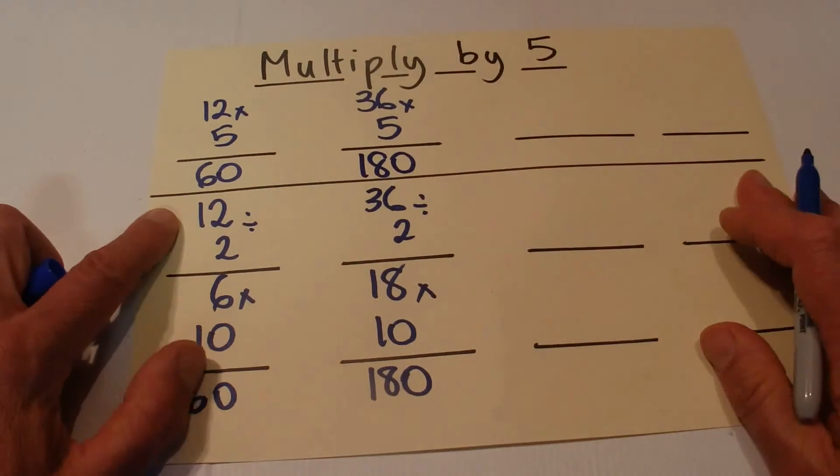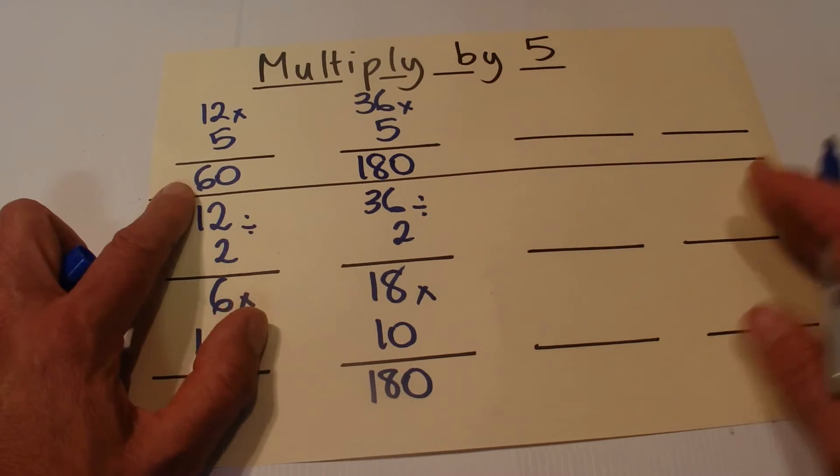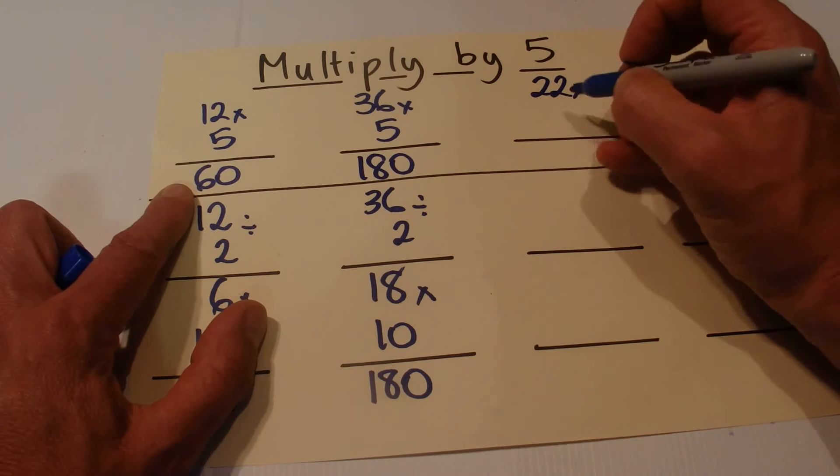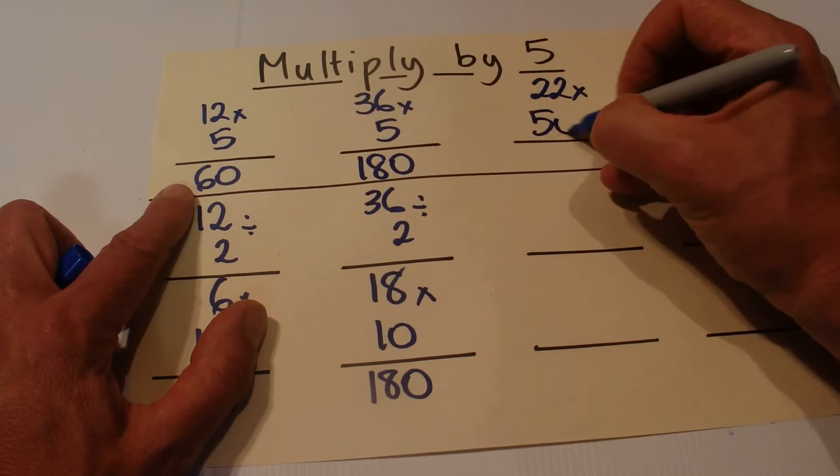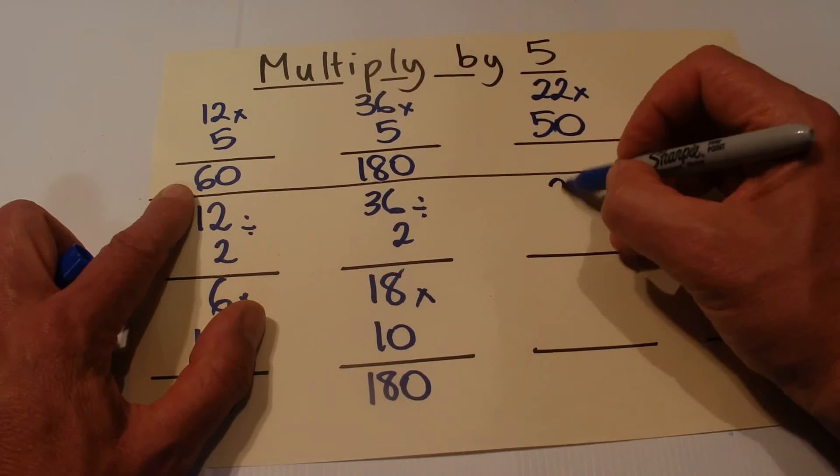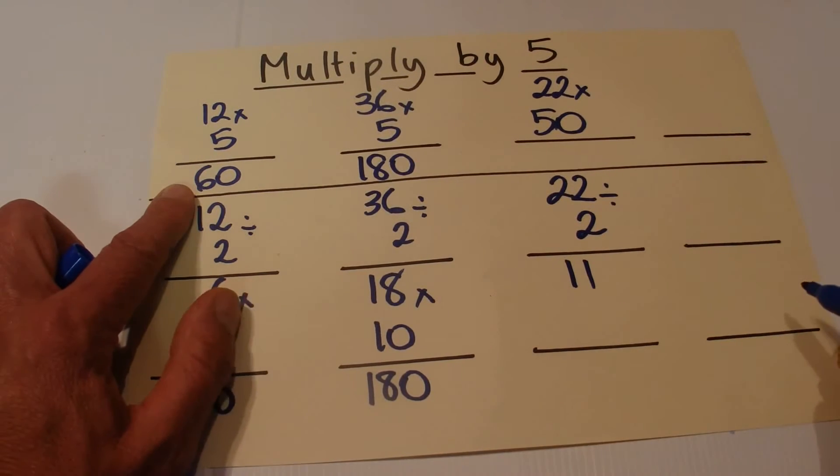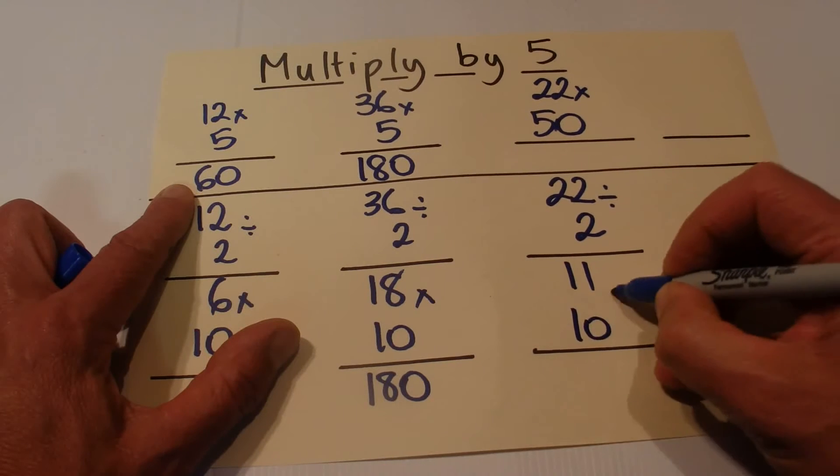The same principle applies if you want to multiply by 50. 22 times 50 in this example. We'll find half of 22 which is 11, and 11 times 10 is 110.